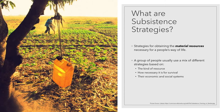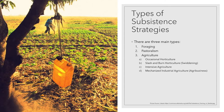So what are subsistence strategies? Simply put, these are strategies for obtaining the material resources necessary for a people's way of life. Most people don't use just one subsistence strategy, but they tend to lean more heavily on one than the others. Usually groups use a mix of these strategies based on the kind of resource they're using, how necessary that resource is for survival, and finally how their economic or social system is structured. The three main types are foraging, pastoralism, and agriculture.